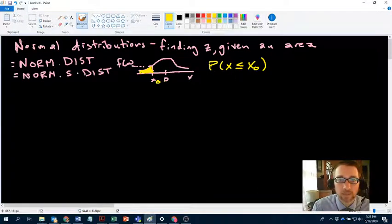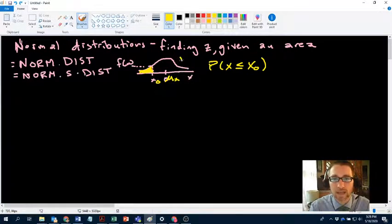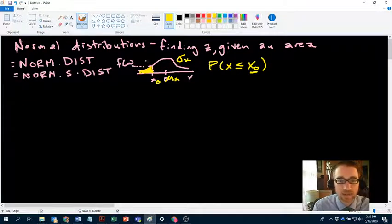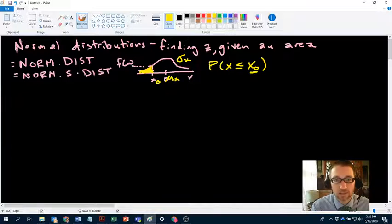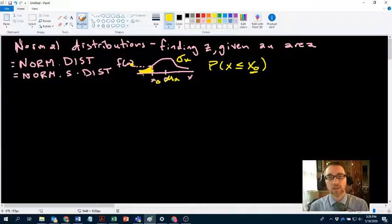Technically that's the probability that x is less than or equal to some value x0. That's what the norm.dist and norm.s.dist functions do. Given a mean mu, a standard deviation sigma, and some value x0, norm.dist will tell you either the height of that curve, f of x0, or the area under the curve to the left of x0.